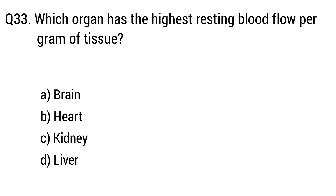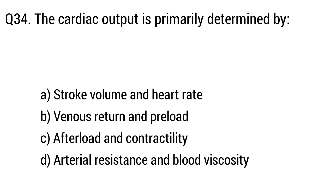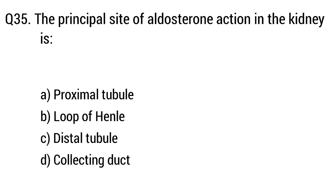Question 33. Which organ has the highest resting blood flow per gram of tissue? The right answer is Option C: Kidney. Question 34. Cardiac output is primarily determined by — the right answer is Option A: Stroke volume and heart rate.